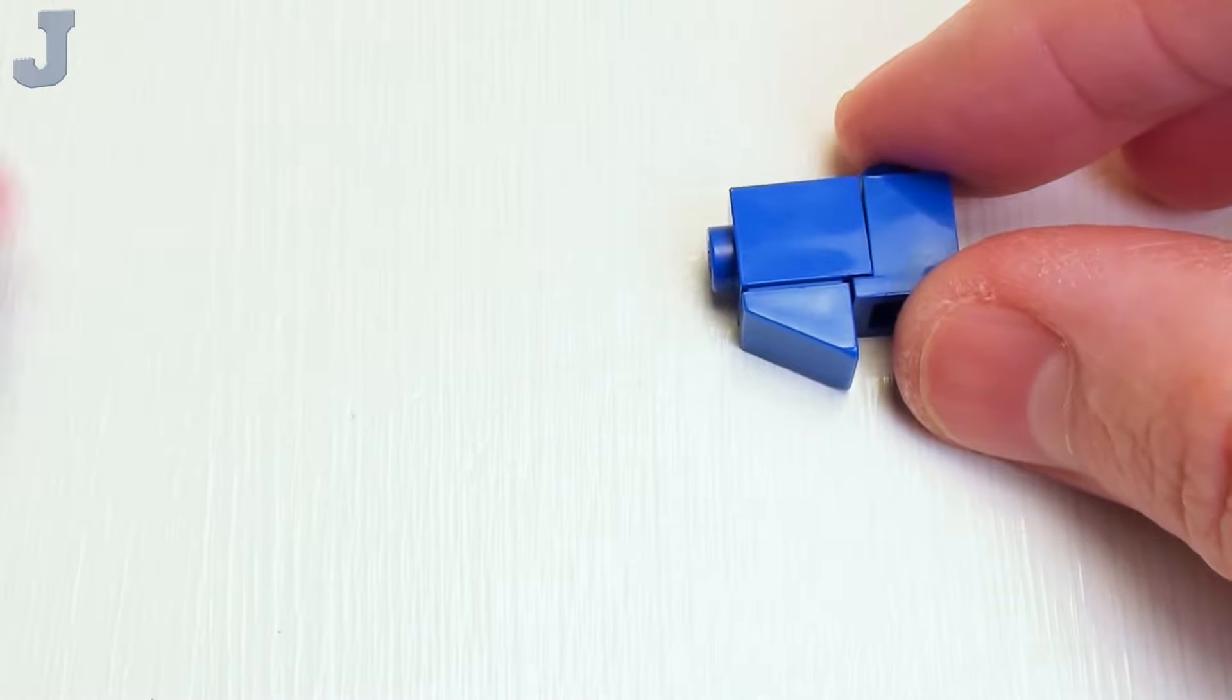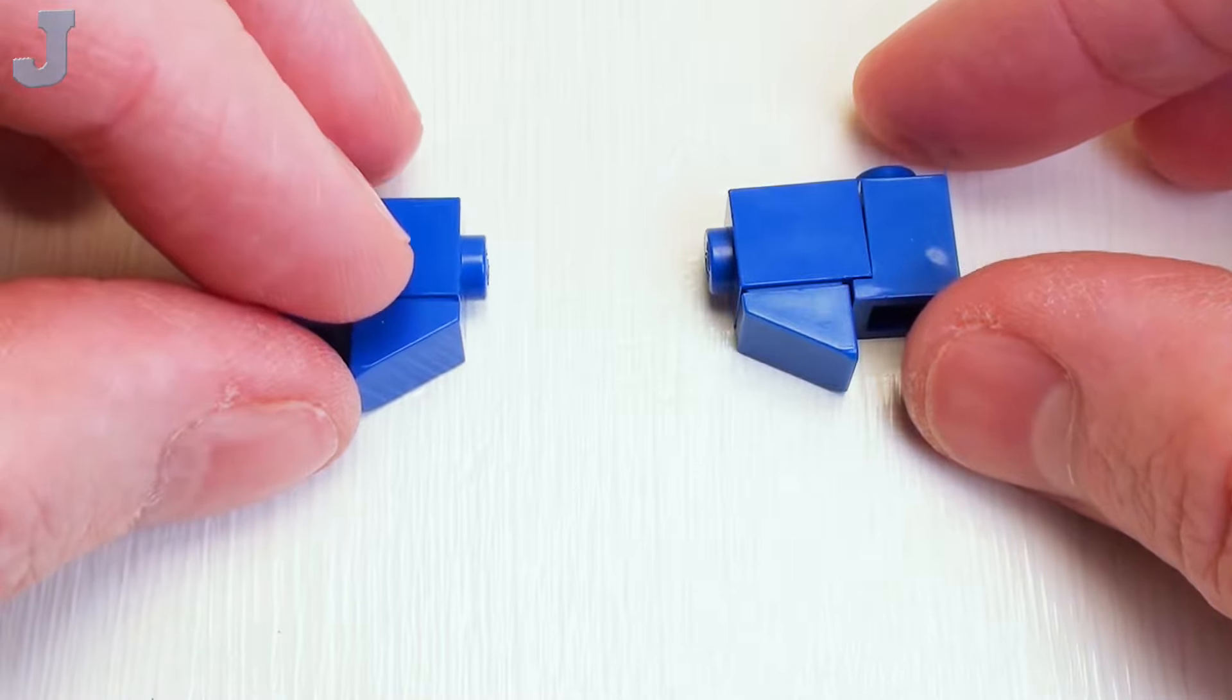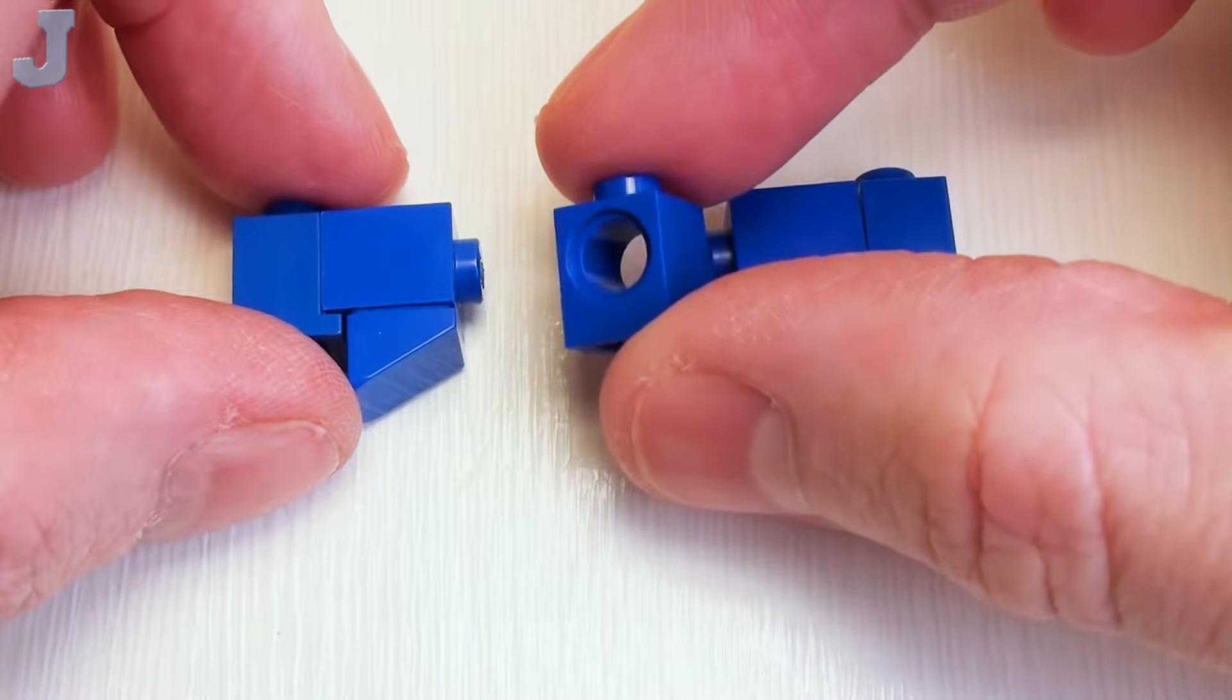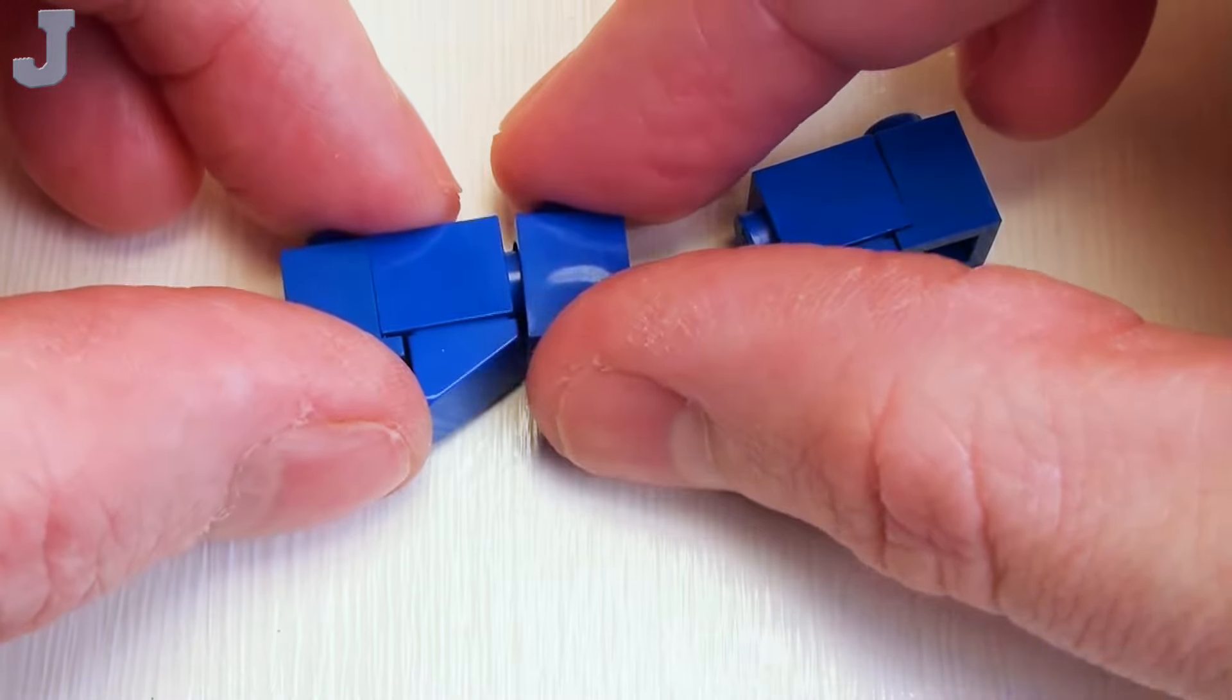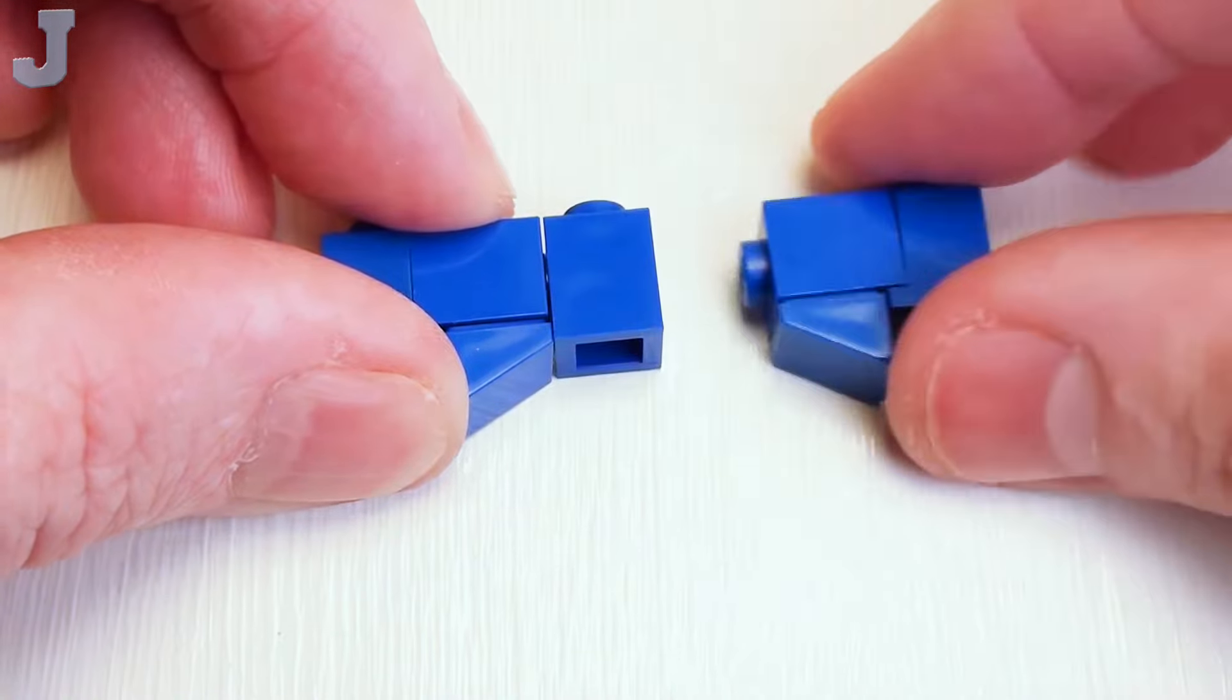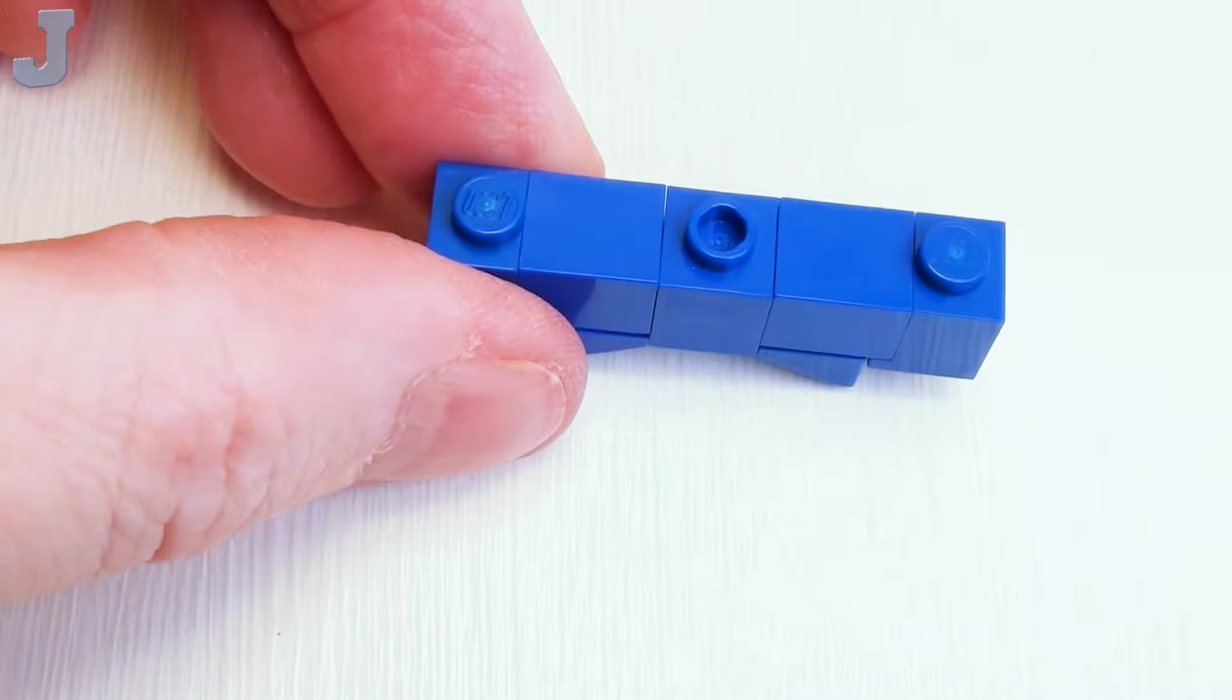Now we're going to make two of these. I'm going to flip one where it's facing the other one and then I want to join these together with a 1 by 1 technic brick. Place the studs inside the technic brick.